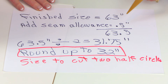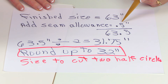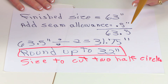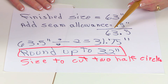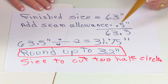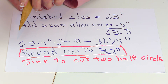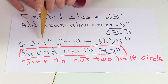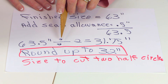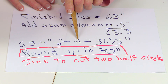But because I'm cutting out two half circles, they need to be stitched together. So add another half inch for seam allowance. That comes out to 63 and a half inches.